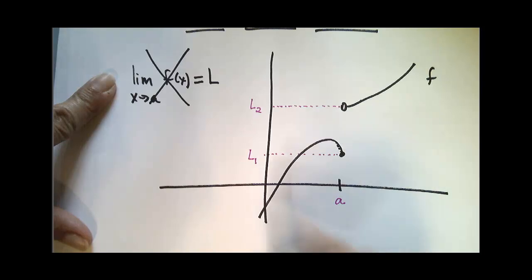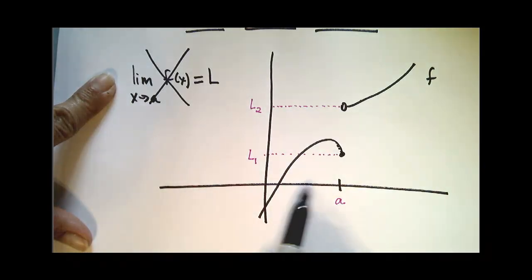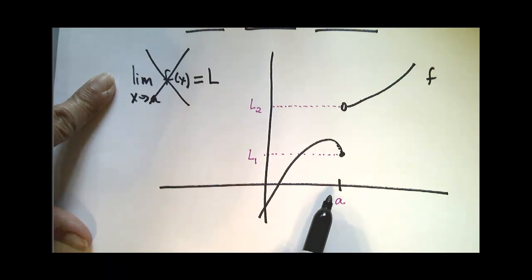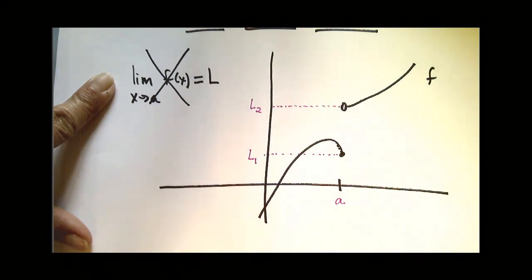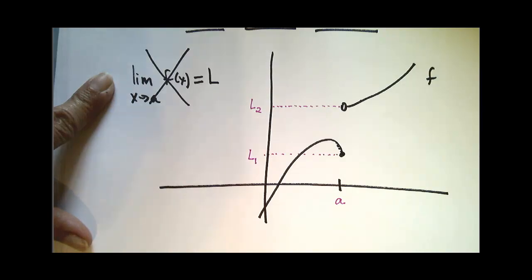However, there does seem to be something of interest here because my function does have a particular behavior to the left of a and a particular intended behavior to the right of a. And so we do have notation, and we talk about these particular limits. They're called one-sided limits.